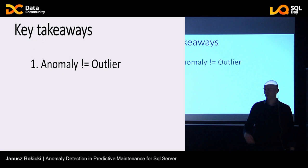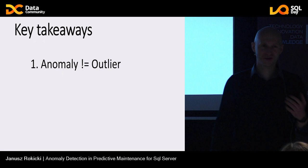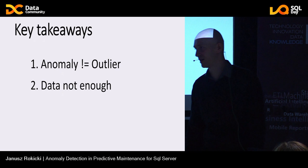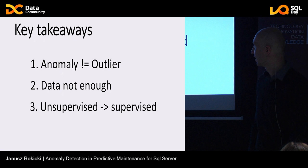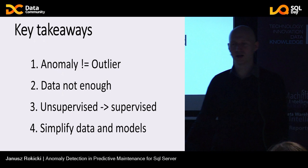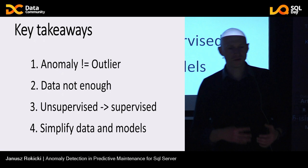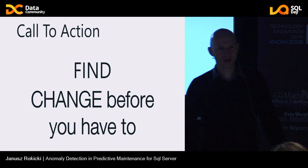Key takeaways from this session: First and foremost, anomaly is not the same as outlier — outliers are in data, anomalies are in the real world. Data alone is not enough; you must use your expertise and domain knowledge, otherwise you can't find outliers and can't even formulate what an anomaly is. The direction from unsupervised to supervised is quite common but not easy to execute. Finally, use as simple models as possible — if a particular case is covered by the simplest explainable model, that's probably the best choice. Find change before you have to. Thank you very much.